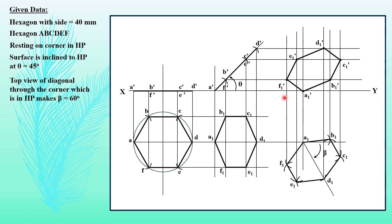And we have obtained the front view and the final top view of the given question. This is the diagonal A1 dash D1 dash which was given as a reference for the last step.